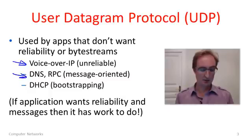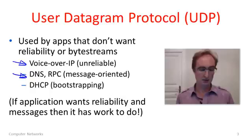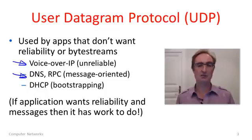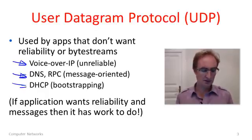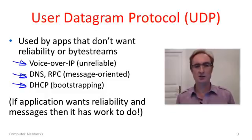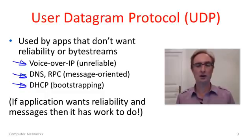Other kinds of protocols that use messages would be DNS and RPC, which stands for Remote Procedure Call. DNS is the machinery that maps between host names like www.uw.edu and IP addresses. A third class would be bootstrapping protocols such as DHCP. Since these are used to get the network going, it's easier if they don't rely on all the complex machinery of TCP.